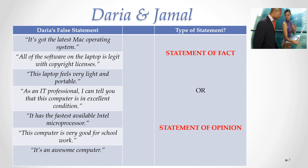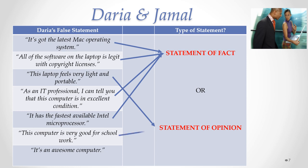Let's look at a number of different false statements that Daria may have made to Jamal to get him to enter into the contract to buy her laptop. The first statement — 'It's got the latest Mac operating system' — would be considered a statement of fact. 'All of the software on the laptop is legit with copyright licenses' — that's another statement of fact. 'This laptop feels very light and portable' — that's a statement of opinion. 'As an IT professional, I can tell you that this computer is in excellent condition' — that usually would be a statement of opinion, but because it's coming from an expert, an IT professional, it could very well be considered a statement of fact. 'It has the fastest available Intel microprocessor' — that's another statement of fact. 'This computer is very good for schoolwork' — that's a statement of opinion. And 'it's an awesome computer' — that's another statement of opinion.